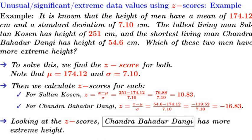Looking at the z-scores, Chandra Bahadur Dangi has more extreme height because Dangi's z-score is larger in magnitude.